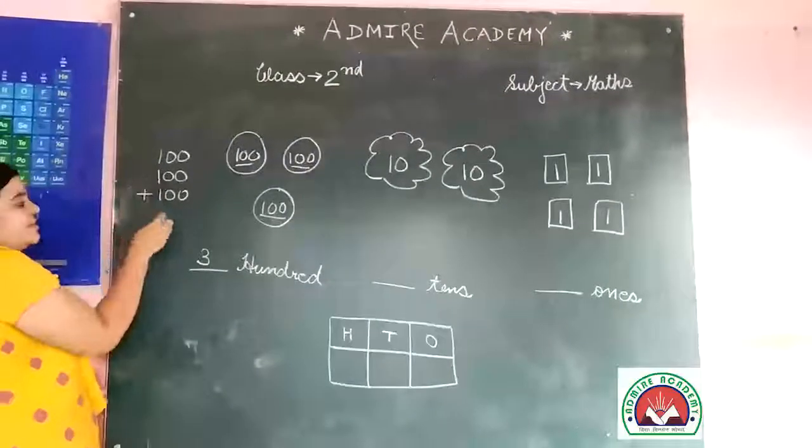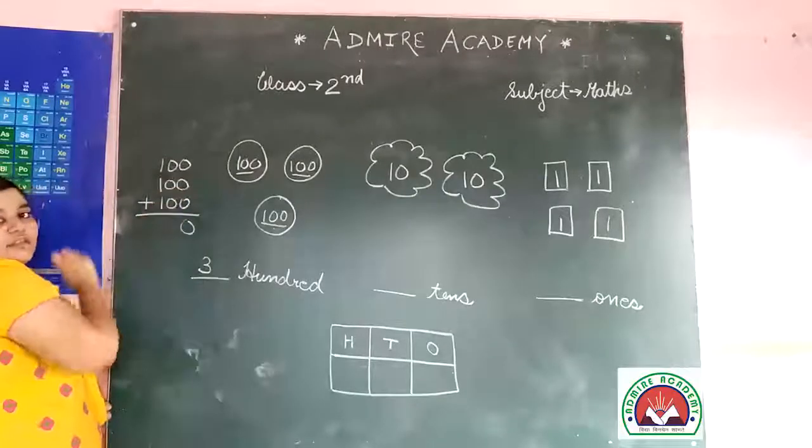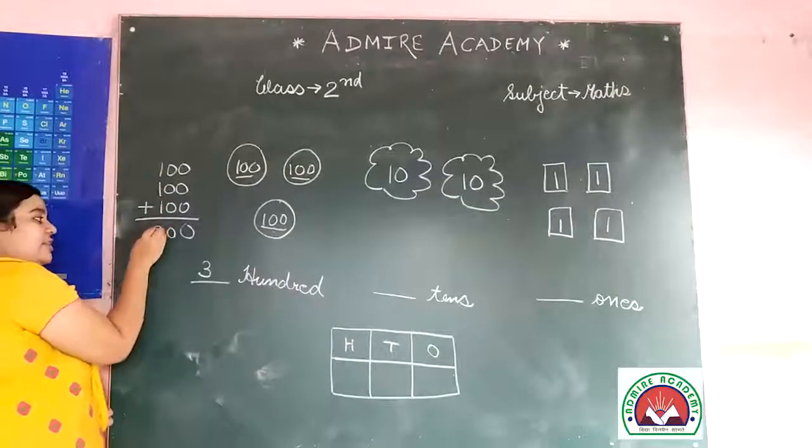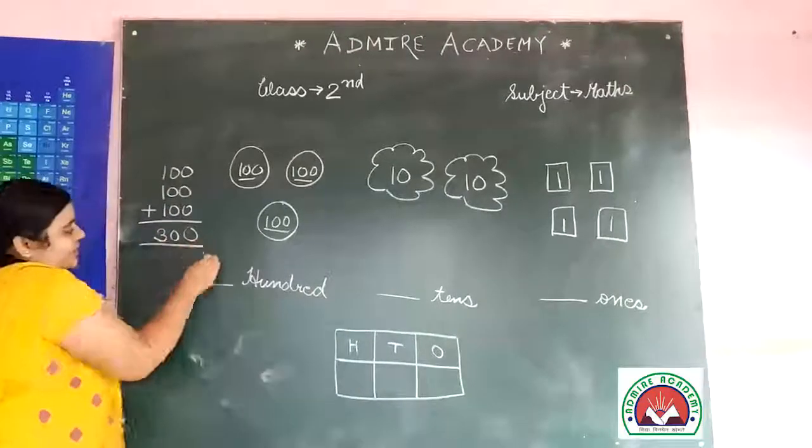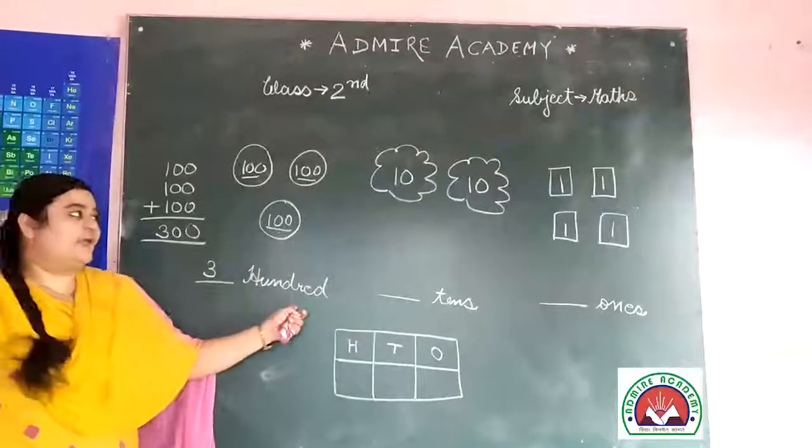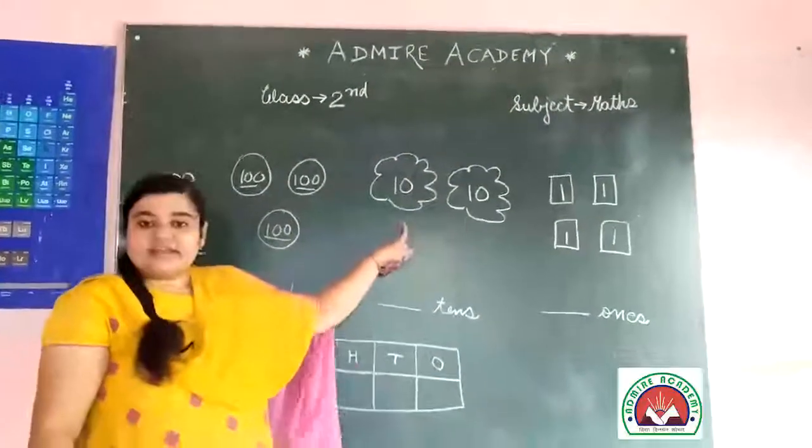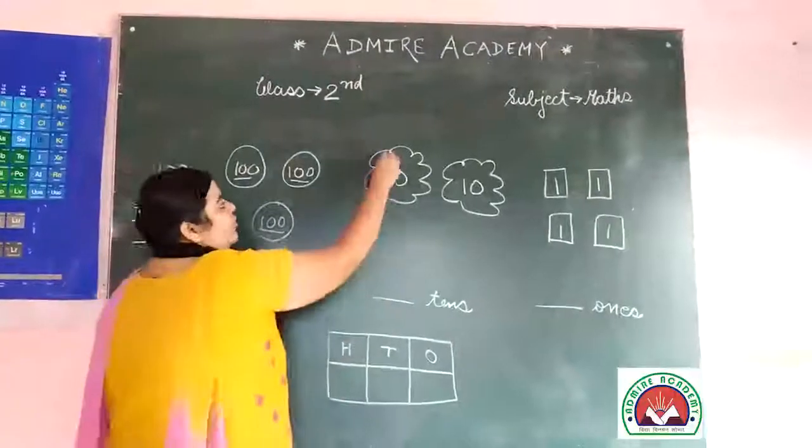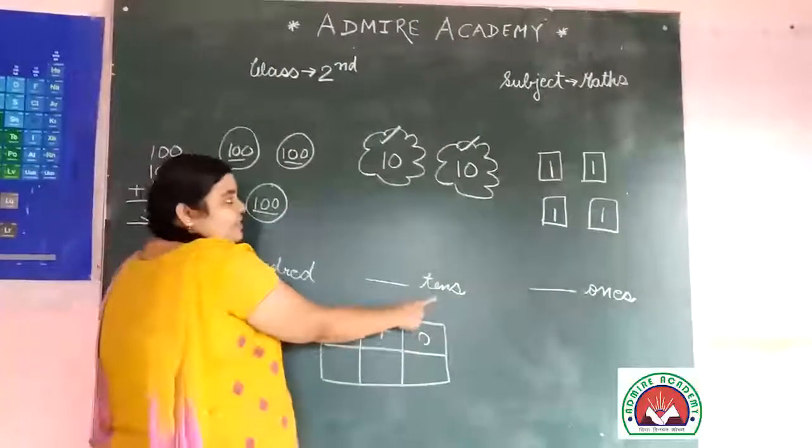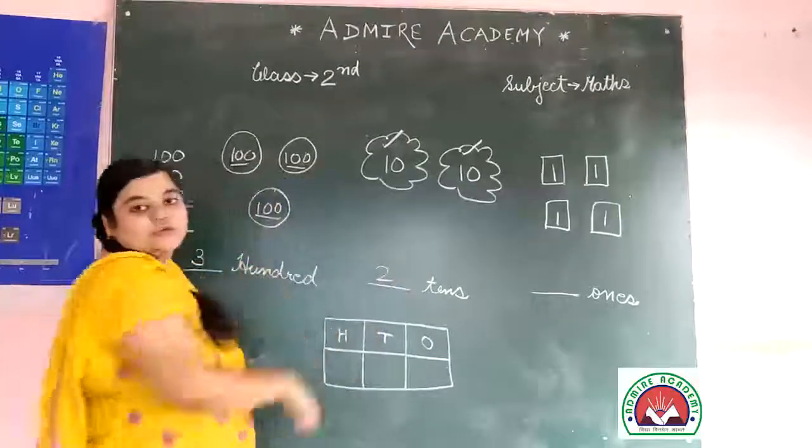And third hundred. So tens - two, one, add two. So tens - one, two. So here we will write two.